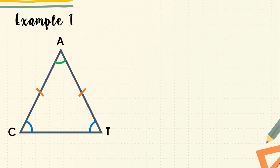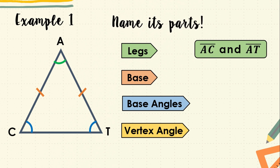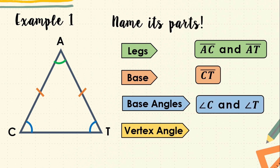Let's have an example. We have here an isosceles triangle ACT. Will you name its following parts? You may pause this video while answering. The legs of this triangle are sides AC and AT. The base is side CT. The base angles are angle C and angle T.